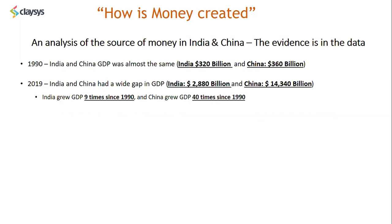The Indian GDP did very well — we grew nine times since 1990. But in China, the GDP grew 40 times since 1990 in the last 30 years. Remember that what we're talking about here is the sum of total annual spending growing year over year.